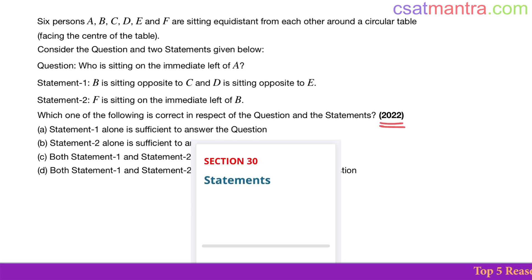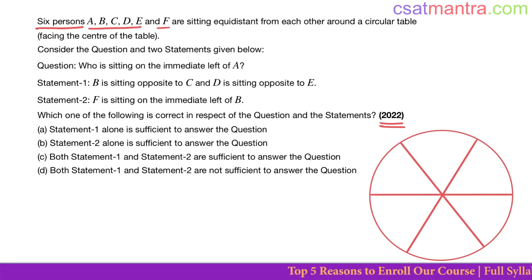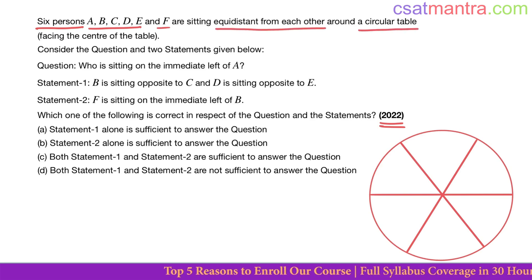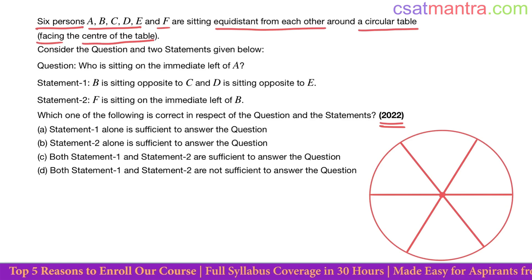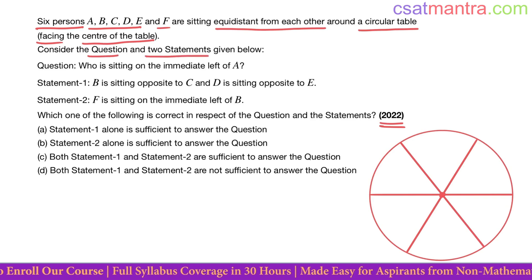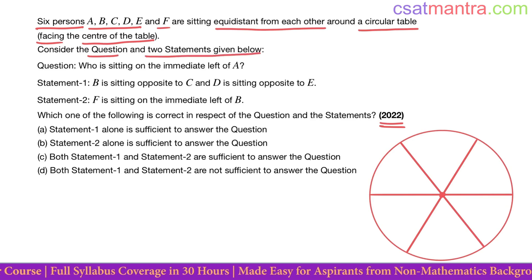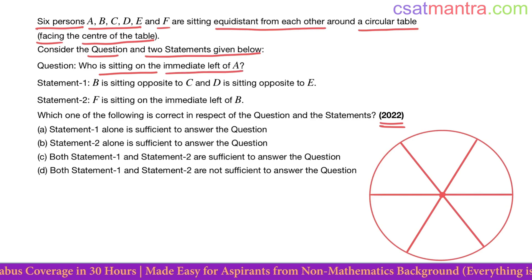2022 question: Six persons A, B, C, D, E, and F are sitting equally distant from each other around a circular table facing the center. Consider the question and two statements given below — question: who is sitting on the immediate left of A?